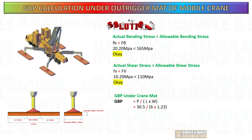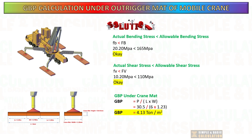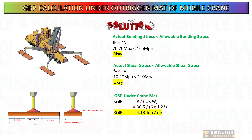Now you can calculate the GBP under the crane mat, which equals the maximum force from the outrigger divided by the crane mat area. Please note that crane mat effectiveness also depends on the ground condition.